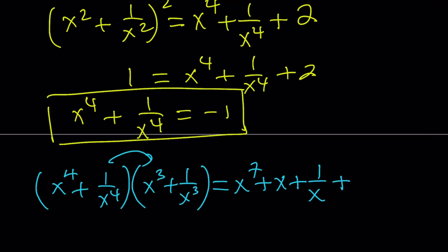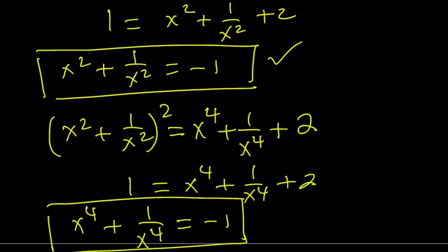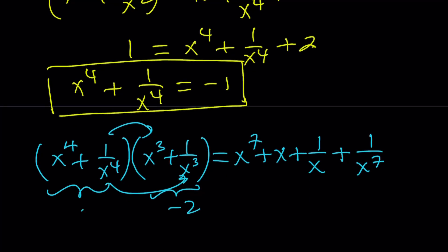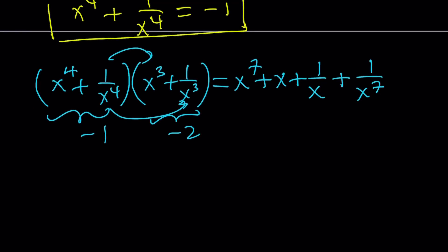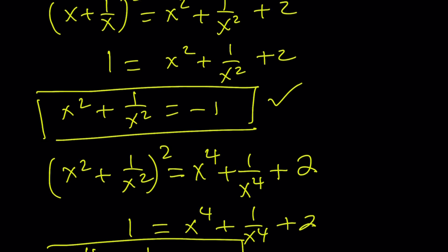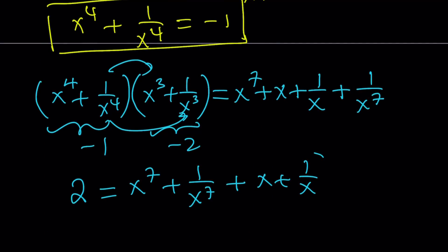Now, when you multiply x^4 by 1/x^3, you're going to get x, right? 1/x^4 times x^3, this is going to give you 1/x. And finally, when we multiply the reciprocals, we're going to get 1/x^7. Now, remember, x^3 + 1/x^3 is -2. So this is -2. And this is -1. The product is positive 2.